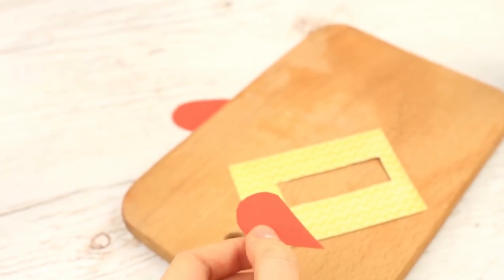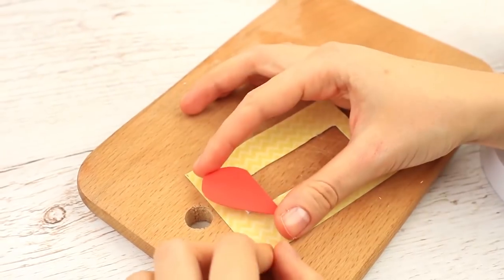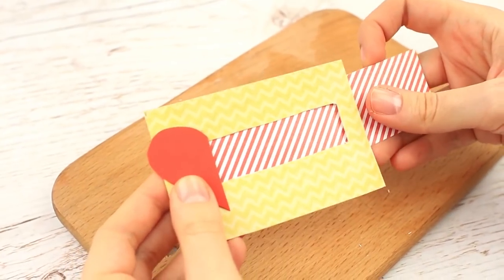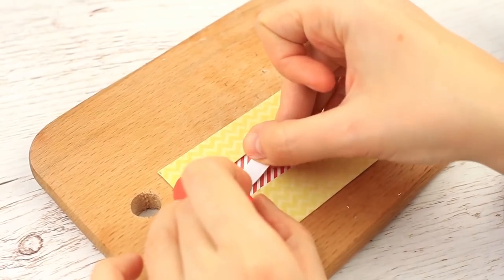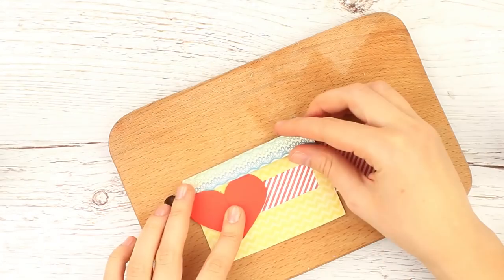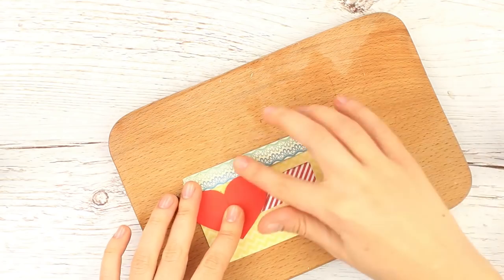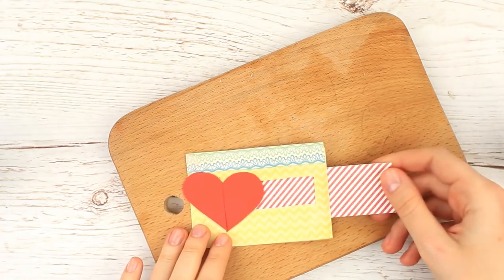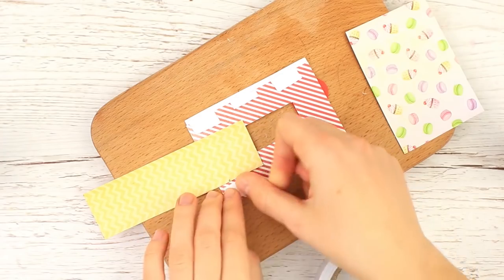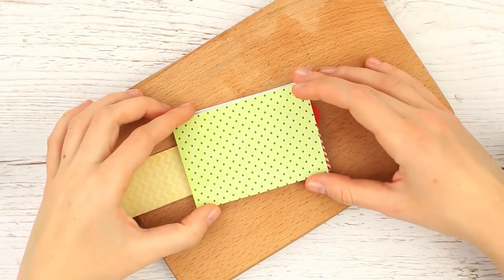Cut it out in half. Attach one half to the double-sided foam tape on the left. Put the slider strip underneath. Attach the other heart half to the slider. Embellish the base. Make sure the heart half moves freely. Cut off the excess. Attach the double-sided tape to the top and bottom of the back.